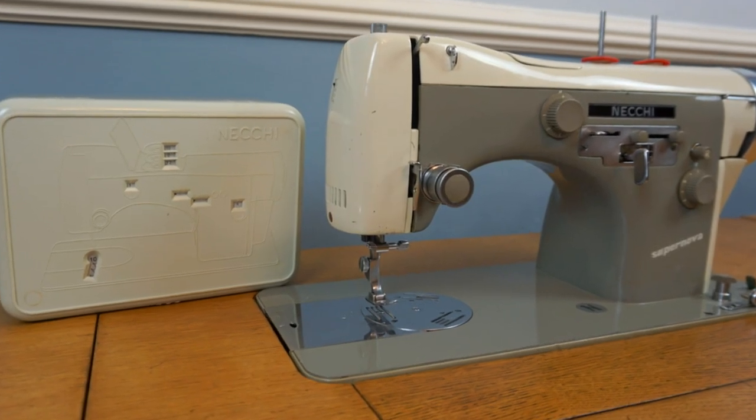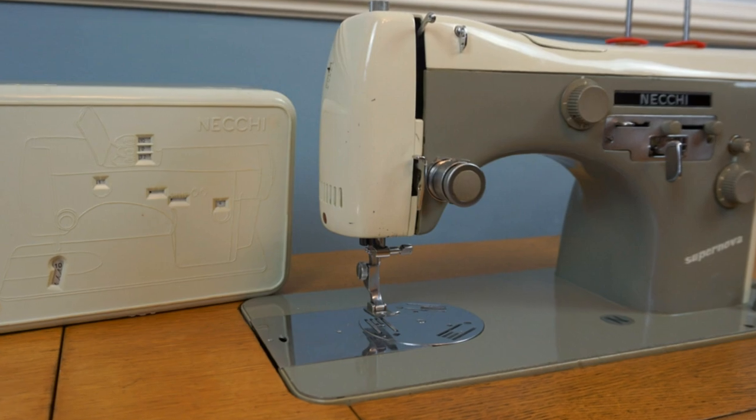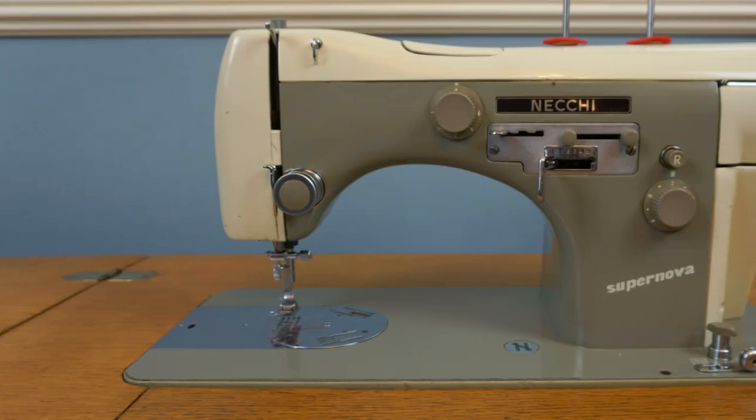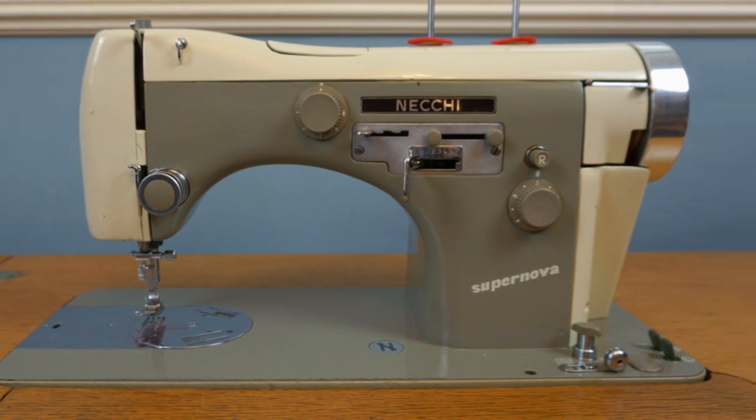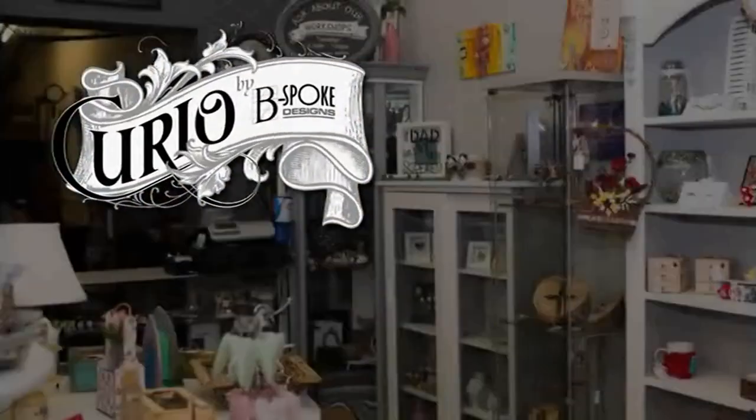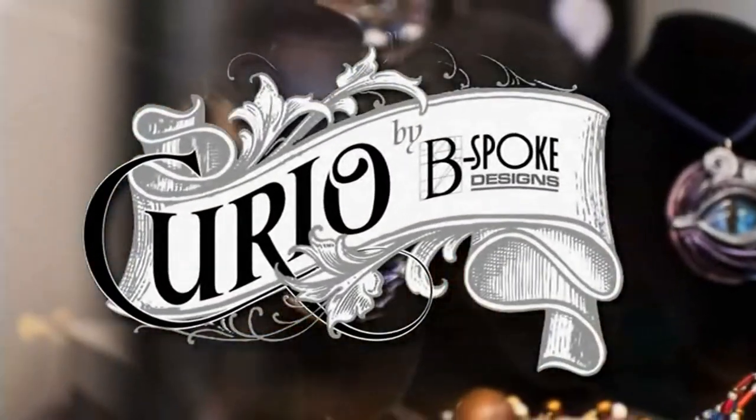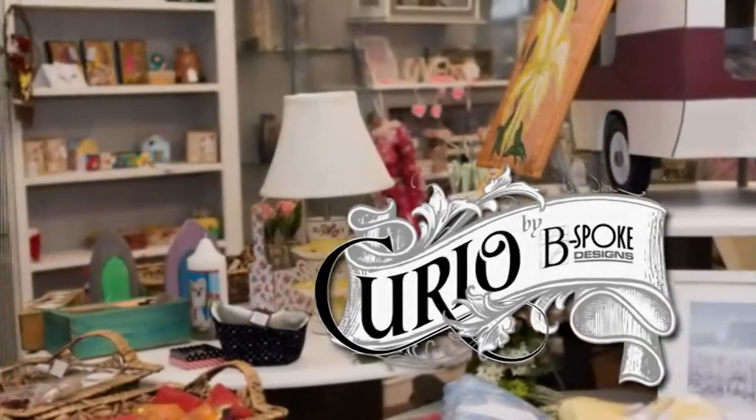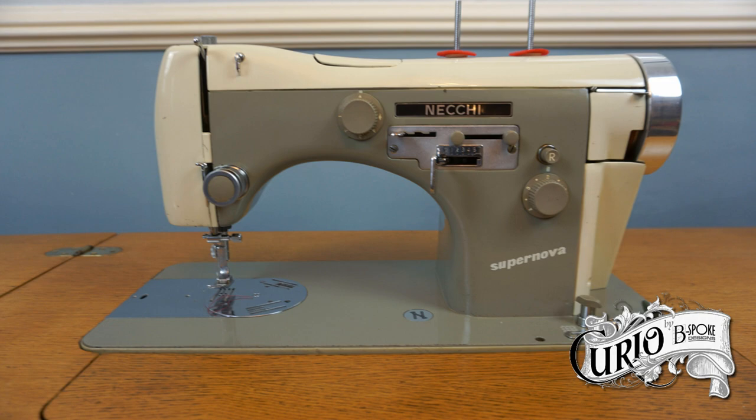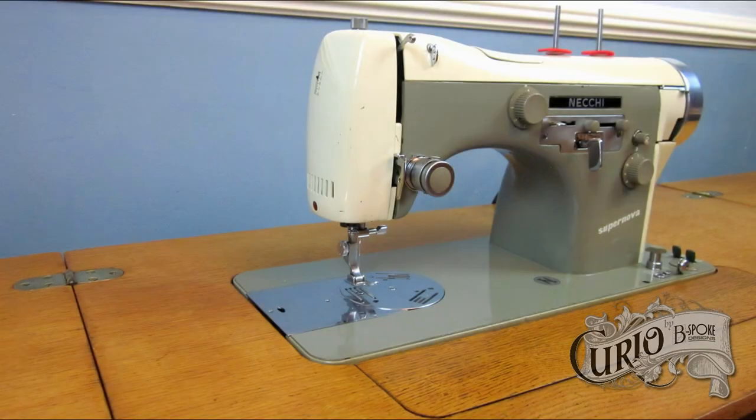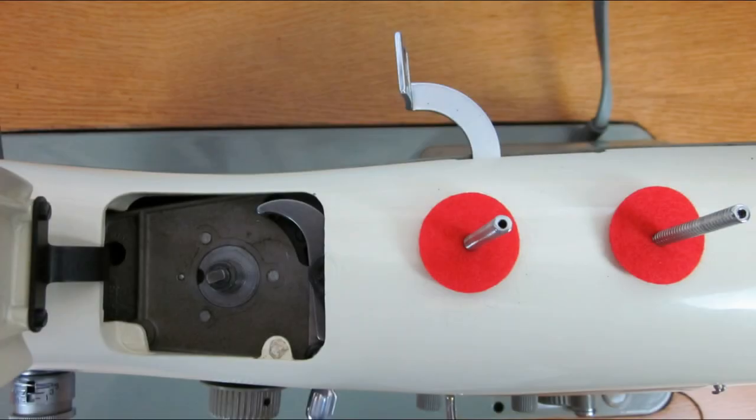This is a Necchi Supernova Automatica, and when it was first purchased new in 1957 must have seemed revolutionary to the average seamstress. The Italian manufacturer Necchi was one of the first, if not the first, to introduce a zigzag machine to the domestic market. This model goes one step further, with cams to produce embroidery stitches.